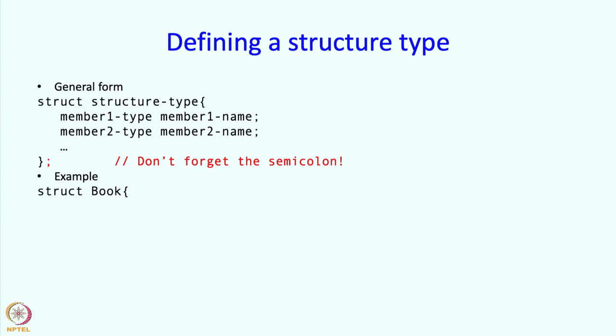Here is a type for storing data about books. So we are going to call that structure type book, capital B and then it will have members. One member is a title which is a character array.